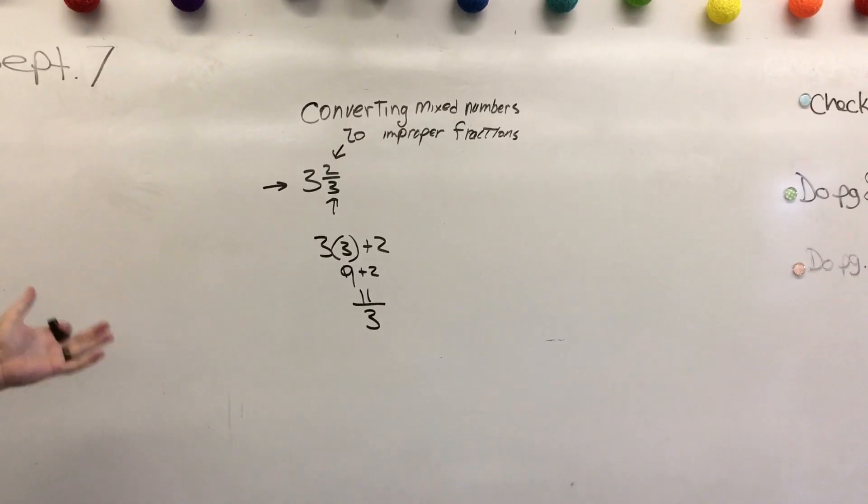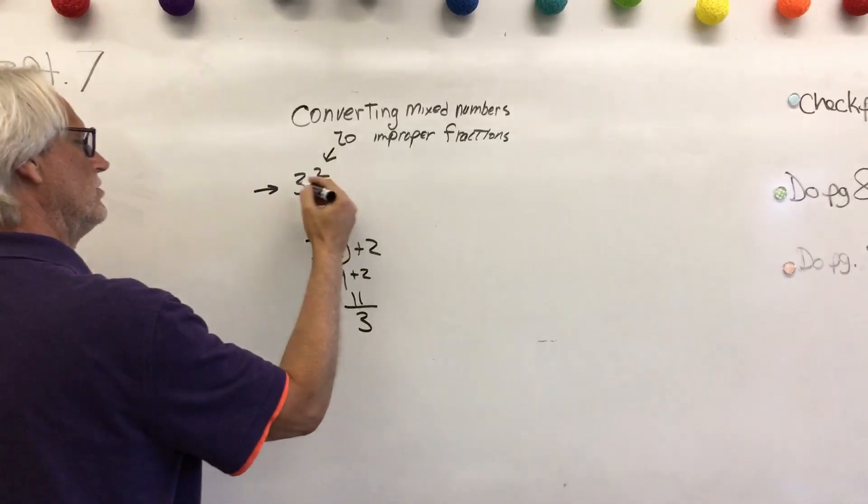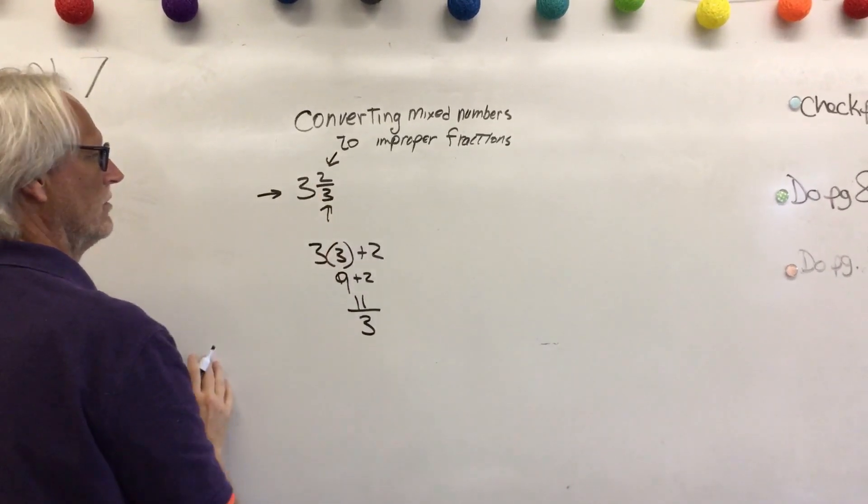So that's the algorithm that we use, denominator times whole number plus the numerator.